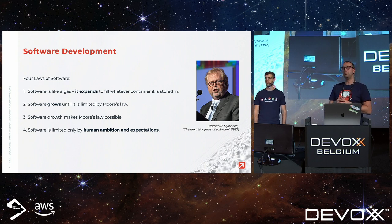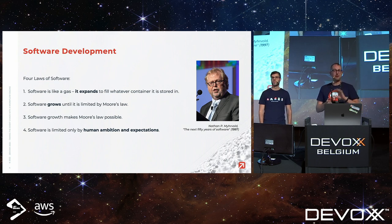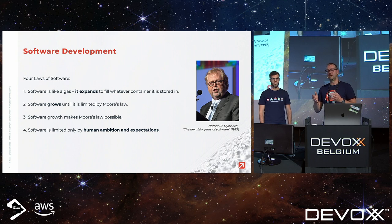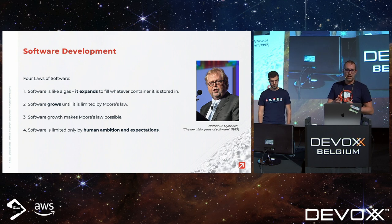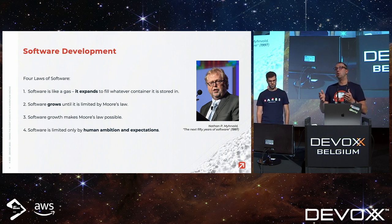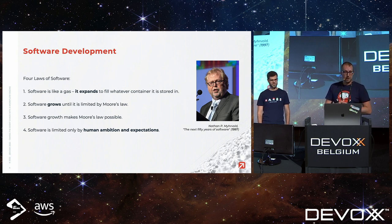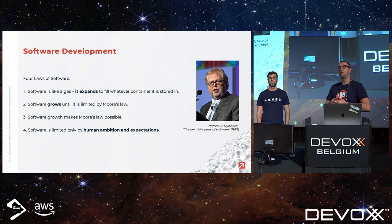Moore's Law — there's now debate whether it's still applicable, but 25 years ago it definitely held. It stated that every two years the number of transistors would double and the price would halve, meaning you could wait a bit and do more complex things more performantly simply by waiting. The third law introduces a chicken-or-egg problem: software growth also makes hardware growth possible, so they go hand in hand.